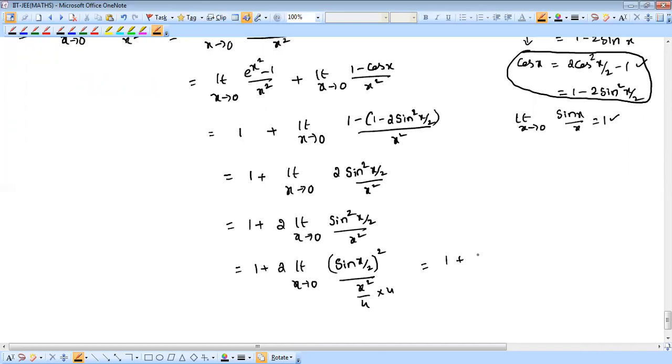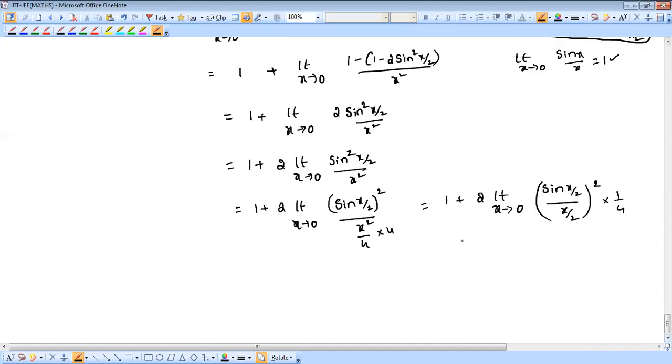See, 1 plus 2 into limit x tends to 0. If you write it, it becomes sin x by 2 by x by 2 whole square into 1 by 4. You see here, x square by 4, I'm writing x by 2 whole square, bringing it as into 1 by 4. Now limit you can apply inside. So 1 plus 2 into limit x tends to 0, sin of x by 2 divided by x by 2 whole square into 1 by 4.